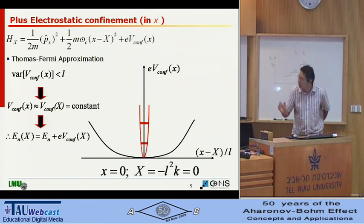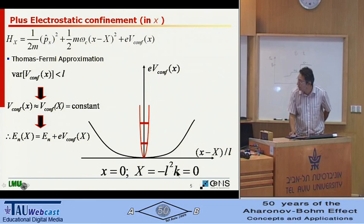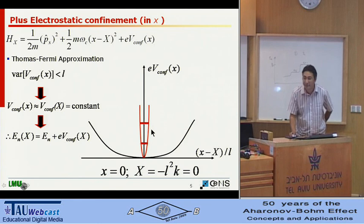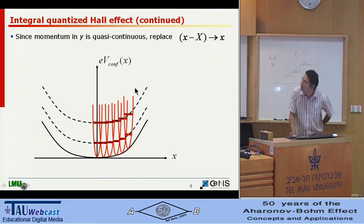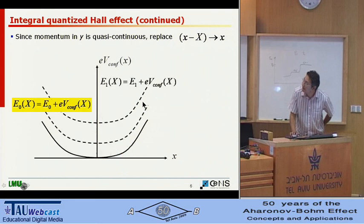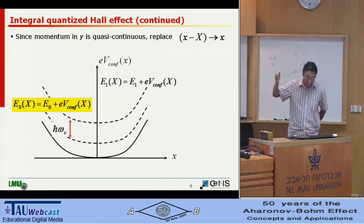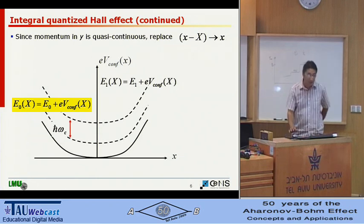Then for a certain momentum, you can place your confinement here, and then this will be first Landau level, second Landau level. And then if you have many of them, you can just make another approximation saying that the momentum is quasi-continuous. Then you can say that now I have my Landau levels in space. So this is my lowest Landau level, first Landau level, et cetera. Then the distance between them, since I'm going to neglect the spin, it will be h-bar omega c.